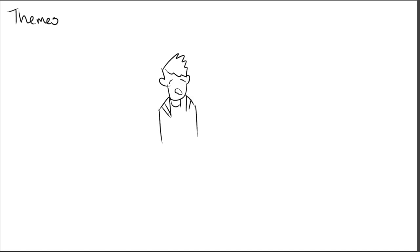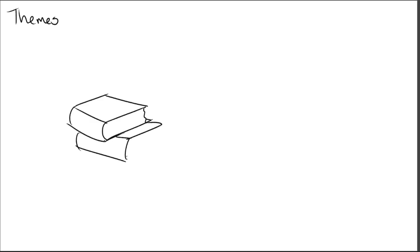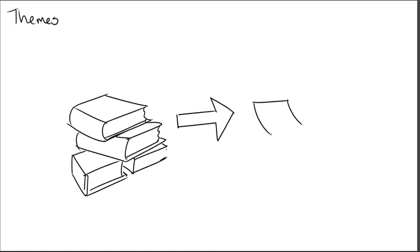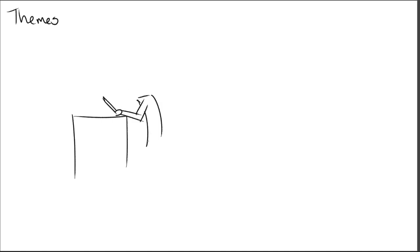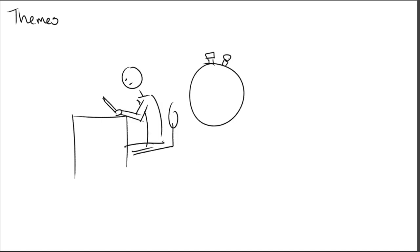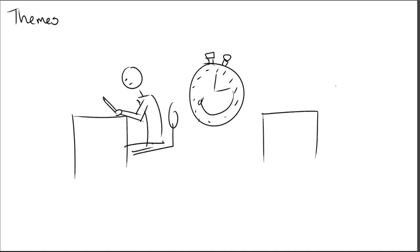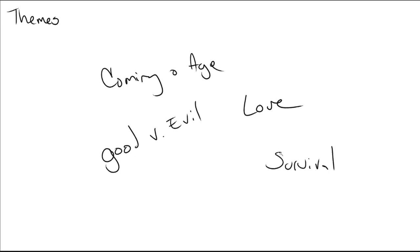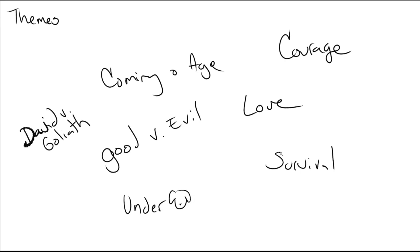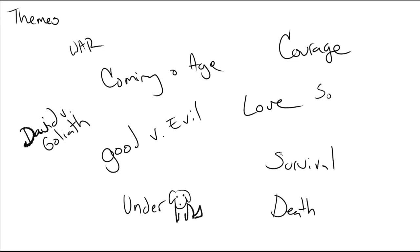Next up is themes. Themes can be somewhat cliche, but at the end of the day there are certain buckets that stories fall into, and it's just easier to identify stories that way. Remember, the main goal of a pitch isn't entertainment — it's to disseminate a bunch of data in a small amount of time. Editors are only going to spend a few seconds glancing at a pitch to determine if it warrants a longer look, so don't use 20 words to say something that could be said in one word. Some typical themes are: coming of age, love, good versus evil, survival, courage, David versus Goliath, underdog stories, death, war, and social injustice — just to name a few.